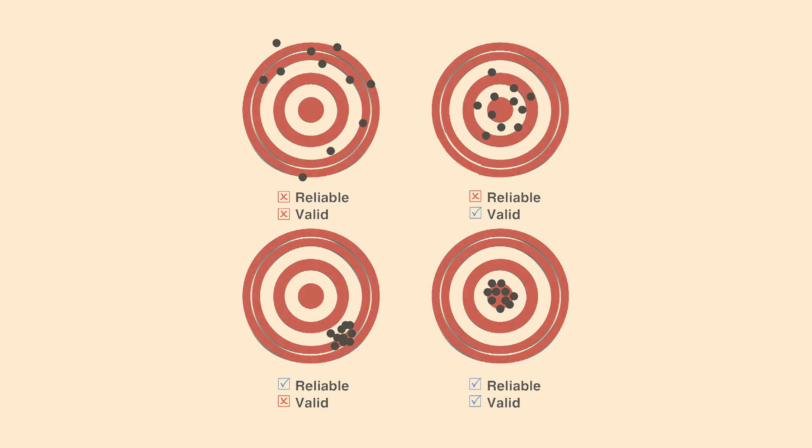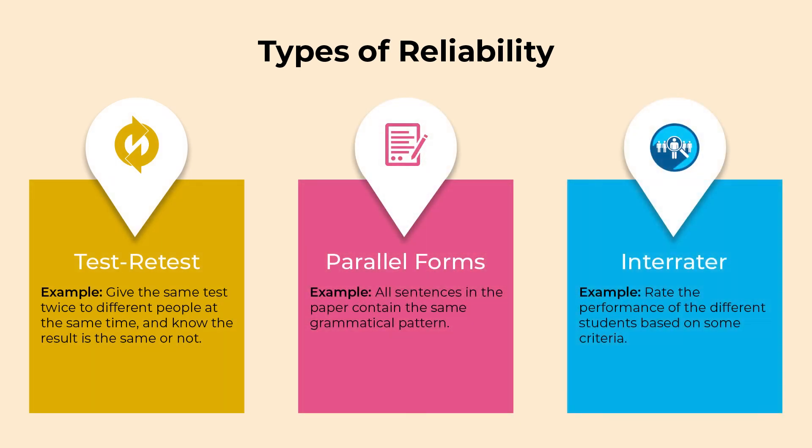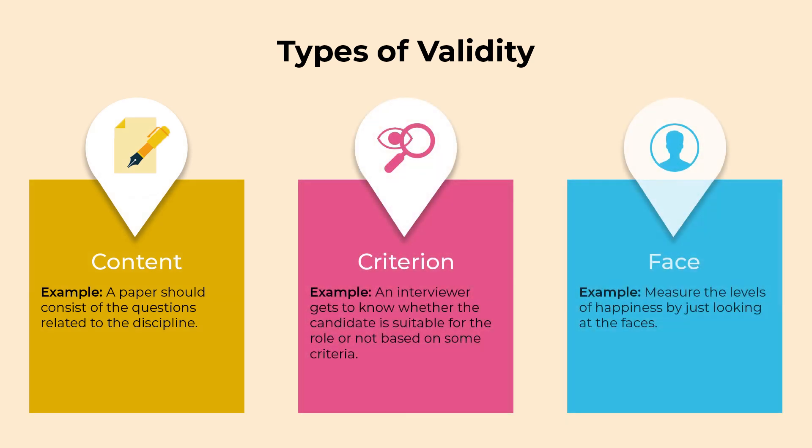Let's know the types of validity and reliability. Examples show that reliability is about the overall consistency of a measure. You may have understood the types better with the help of examples.